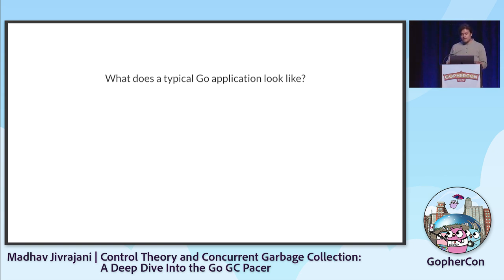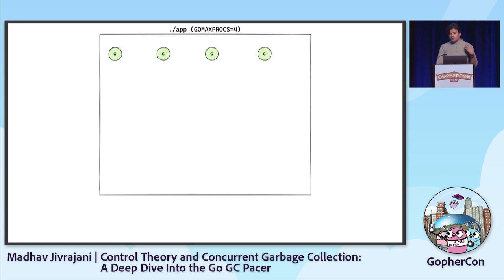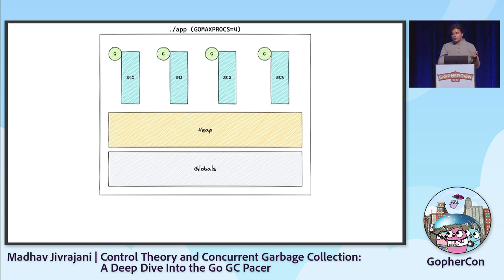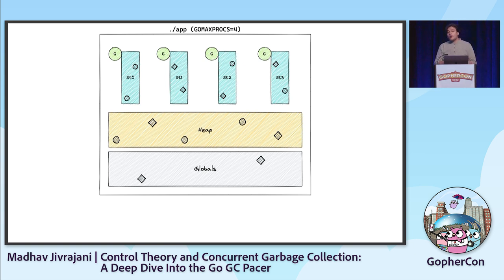Let's look at what a typical Go application might look like. With a GOMAXPROCS value of 4, we have 4 running Go routines, each with its own stack, plus heap memory and globals. Each running Go routine might allocate memory on the stack, on the heap, or both. Over time, our application accumulates garbage — memory no longer in use. To deal with this, we can use manual memory management as in C, or employ a garbage collector, as Go does.